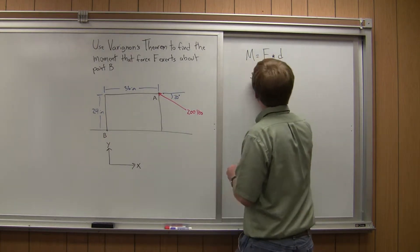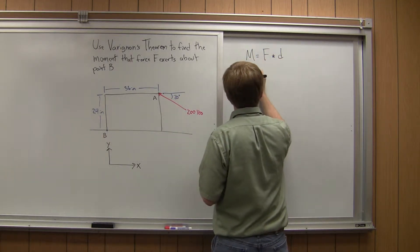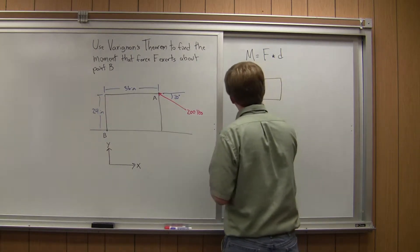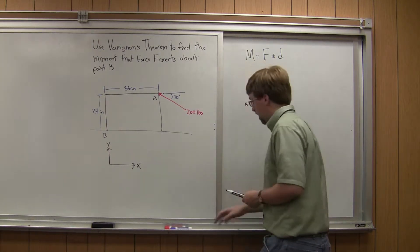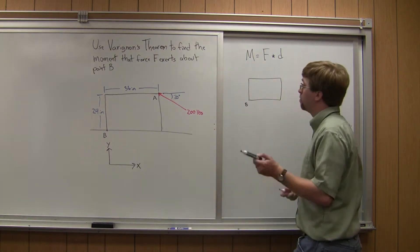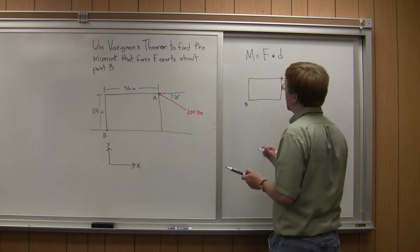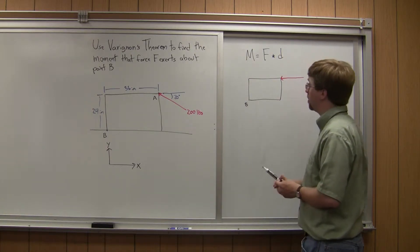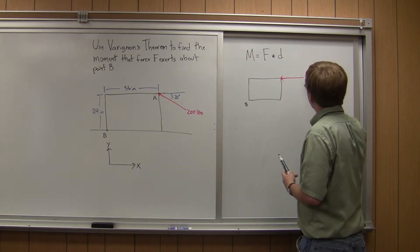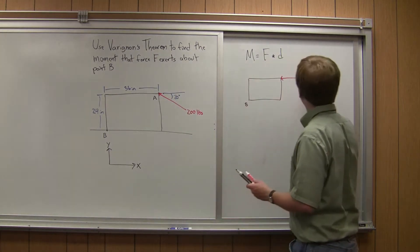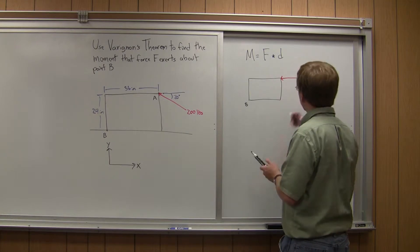So first thing we need to do is we're going to redraw the box like so. We've got point B down here, and we need to find the x and y components. The x component is going to be in the negative x direction, and that's going to be 200 pounds times the cosine of 20 degrees.